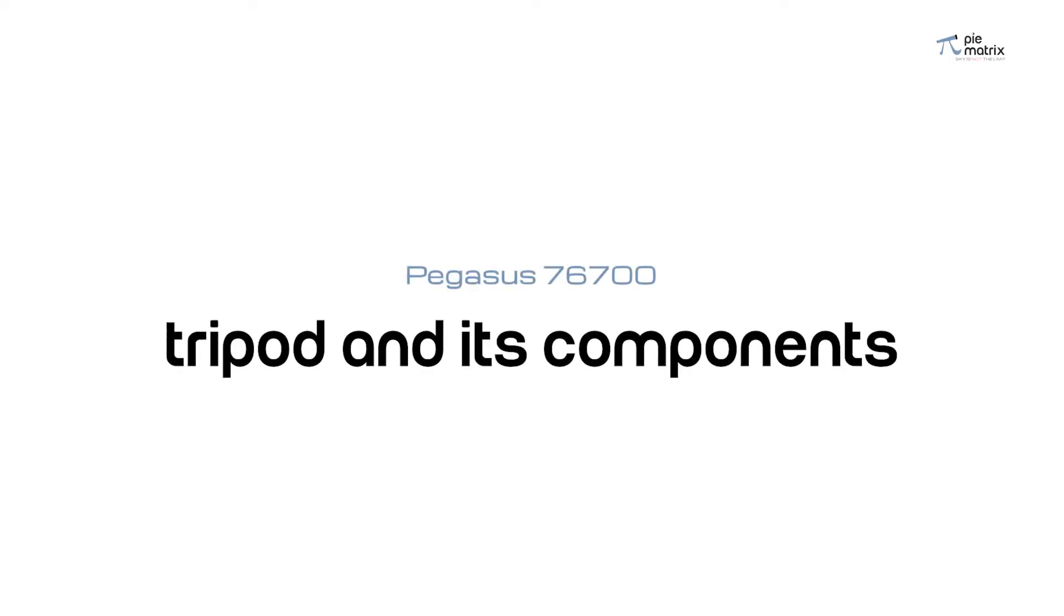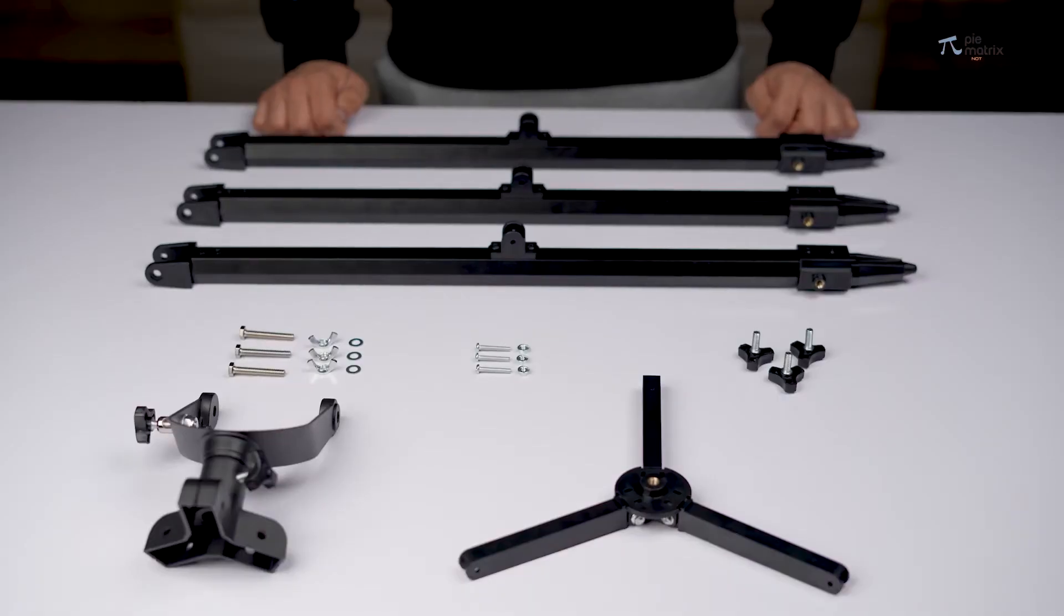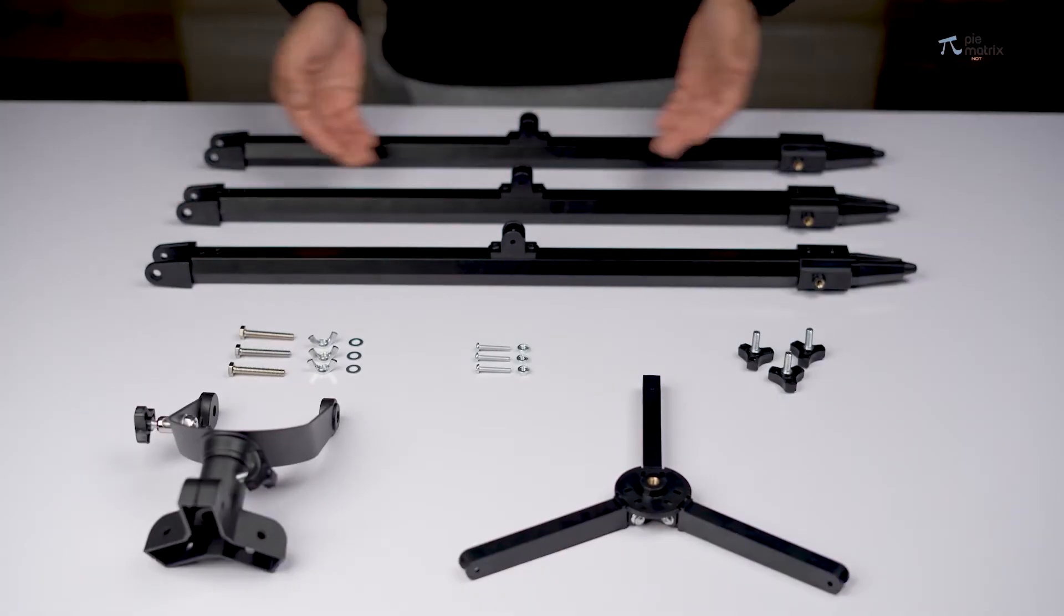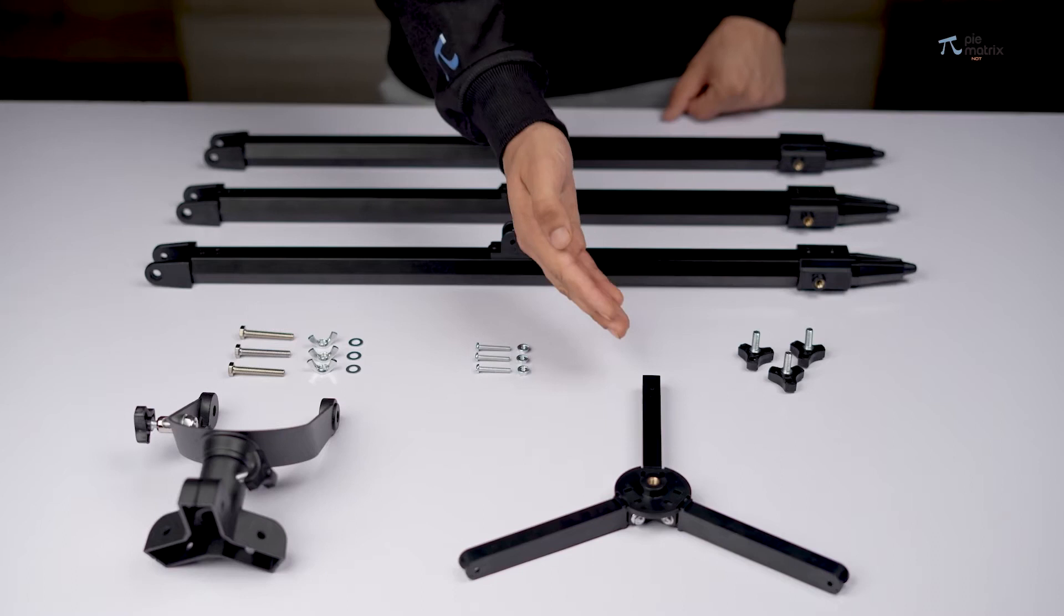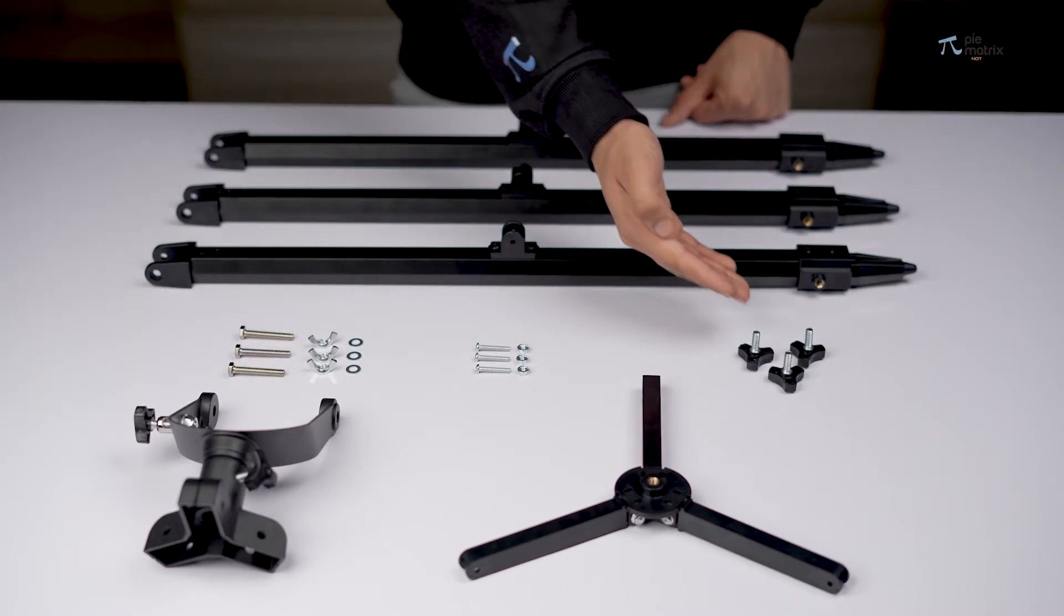Let's take a closer look at the tripod assembly. The tripod assembly consists of these three tripod legs, a central leg brace, metal U-mount and a few knobs and screws.